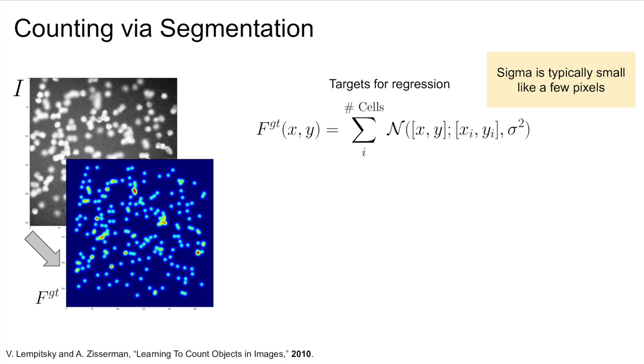A core approach in cell counting with machine learning, developed in 2010, is to count via segmentation. Here, we generate a segmentation map to predict given the input image and predict it as we would any other segmentation. The segmentation is computed using the dot labels.